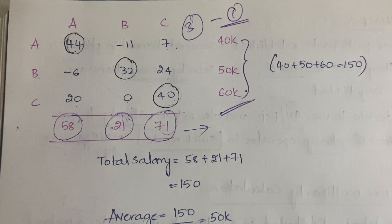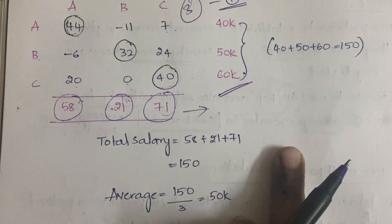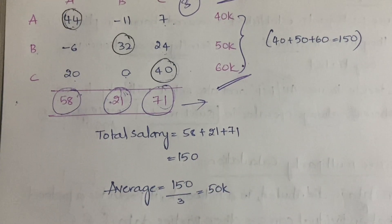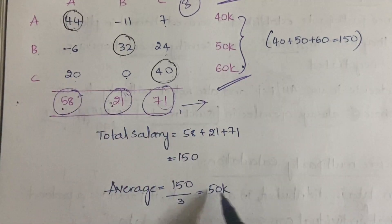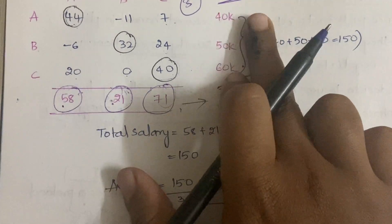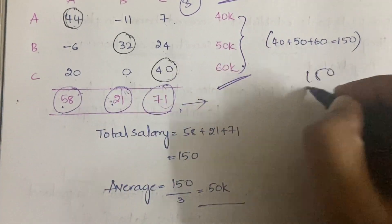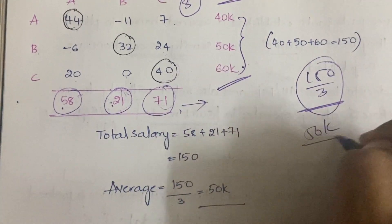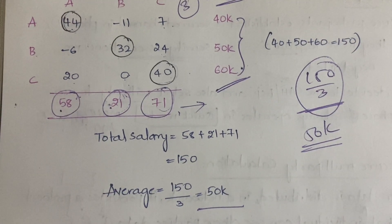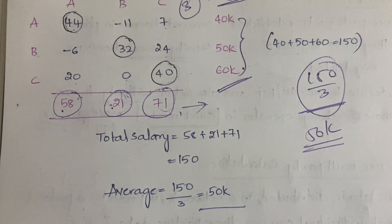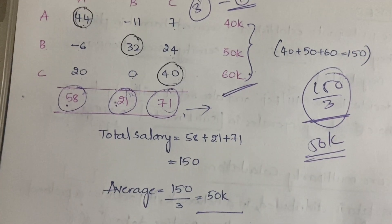So A announces a sum of 58, B announces 21, and C announces 71. To calculate the total salary: 58 + 21 + 71 = 150. Average = sum divided by number of parties = 150 ÷ 3 = 50. This matches the true average: 40 + 50 + 60 = 150, and 150 ÷ 3 = 50. So the average salary is 50,000 rupees — and importantly, no individual salary was revealed to the others.